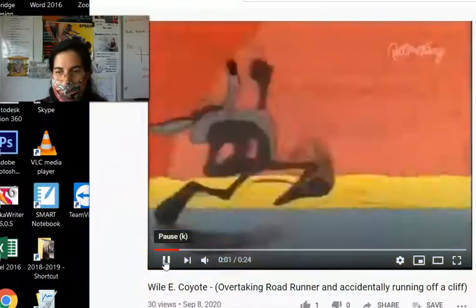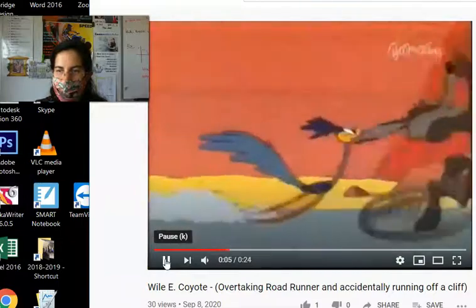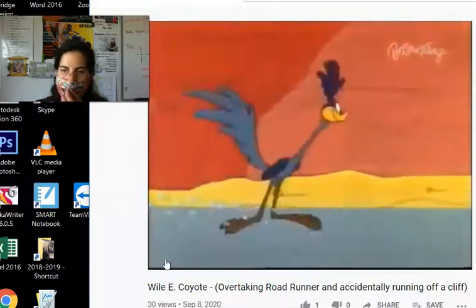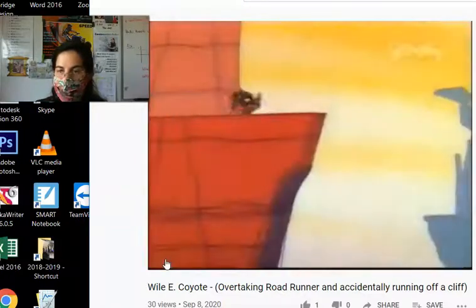This is the classic Wile E. Coyote problem. The Coyote is chasing the Roadrunner. The Roadrunner is too smart for the Coyote and it's all going to end the same way. The Coyote is going to fall straight off a cliff.